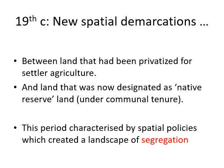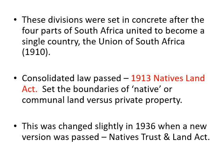These divisions between settler farms privately owned and the native reserves became set in concrete after those four parts of South Africa united to become a single country — the Union of South Africa in 1910. It wasn't long before the new country passed a consolidated law. I'm sure you've heard of it — it's famous, or rather infamous — called the 1913 Natives Land Act. This had a map supporting it that set out the boundaries of native areas and communal land. This pretty much set up the scene for the 20th century.